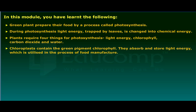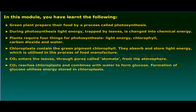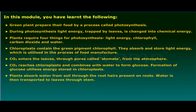Chloroplasts absorb and store light energy, which is utilized in the process of food manufacture. Carbon dioxide enters the leaves through pores called stomata from the atmosphere. Carbon dioxide reaches chloroplasts and combines with water to form glucose. Formation of glucose utilizes energy stored in chloroplasts. Plants absorb water from soil through the root hairs present on roots, and water is then transported to leaves through the stem.